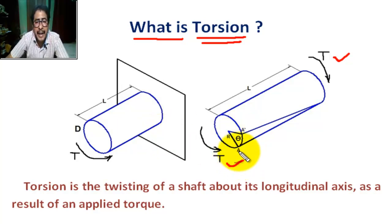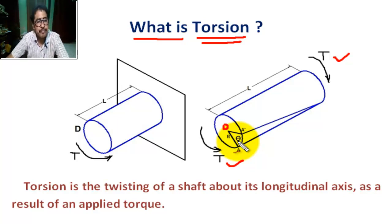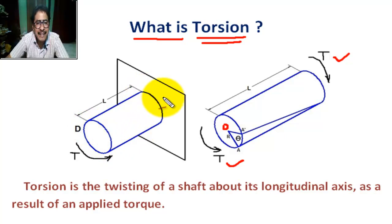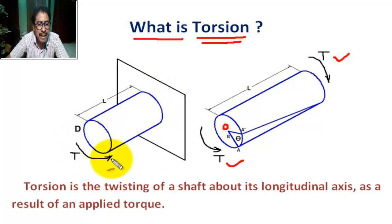Here, point A shifts to point A-dash, and the angle A-O-A-dash at the center of the shaft is called the angle of twist, denoted as theta. In another figure, a shaft of length L and diameter D has one end fixed and the other end free, where torque is applied on the free end.